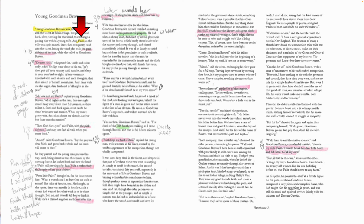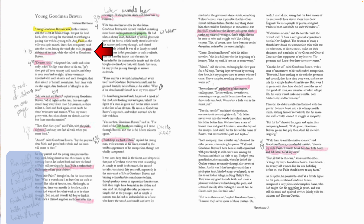I'm going to highlight in blue some of her notes in the margin. She's really interested in the pink ribbons, an important symbol in the story. She says: 'pink ribbons, brightness, and so closely twined with Faith — they both represent Faith and Hope.' And then she highlights in pink every time the pink ribbons are mentioned in the story. It's a really good way of keeping track of a symbol she was interested in.